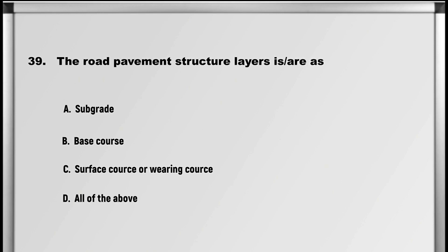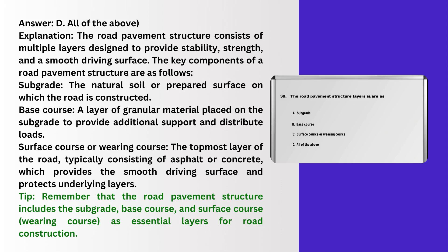Next up is question number 39: The road pavement structure layers are: A. Subgrade, B. Base course, C. Surface course or wearing course, D. All of the above. Answer: D. All of the above.